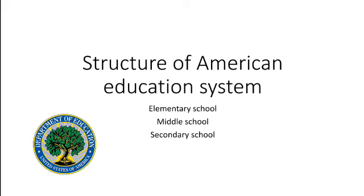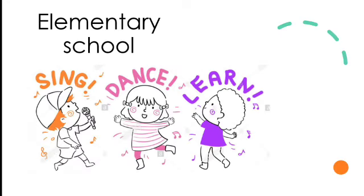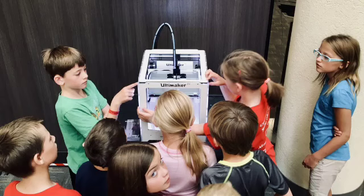Fourth point: structure of the American education system. The first level is elementary school. This is a holistic, child-based education system. Students are exposed to different activities like dancing, singing, sports, arts, and other activities, in addition to academics.